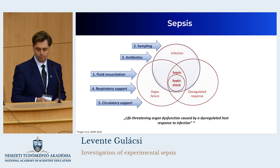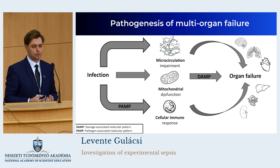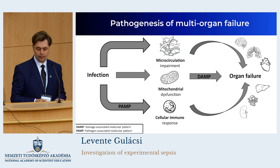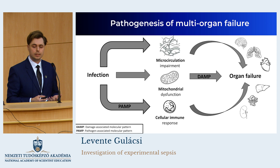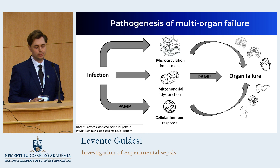But how does an infection cause multi-organ failure? There are several different pathways, but I would like to highlight a few of them: impairment of microcirculation, mitochondrial dysfunction, and cellular immune response. These mechanisms work hand-in-hand, reinforcing each other, leading to organ failure.